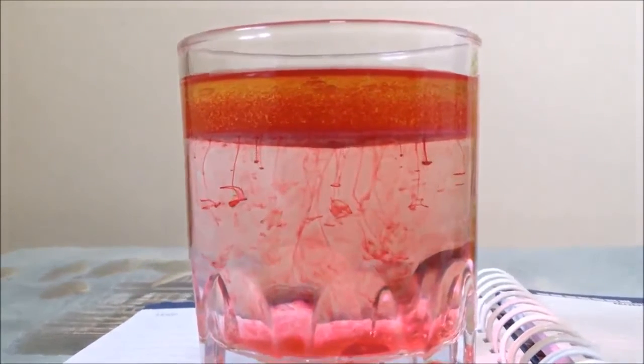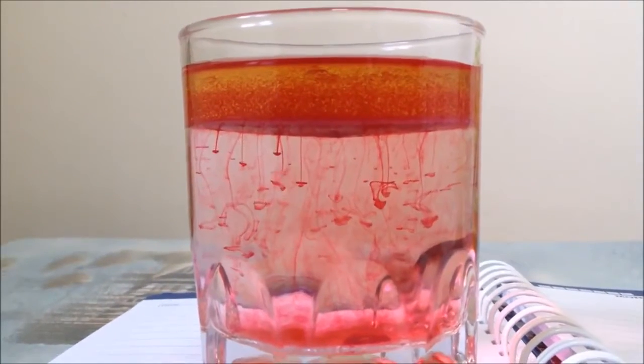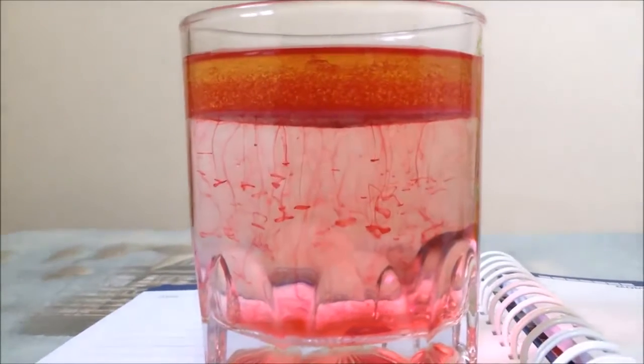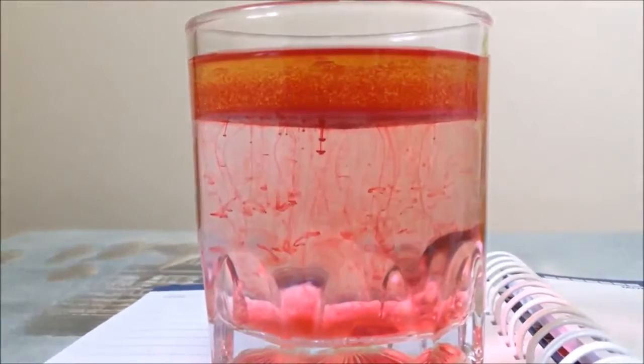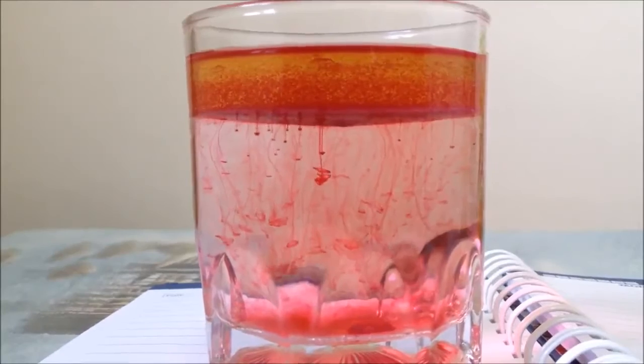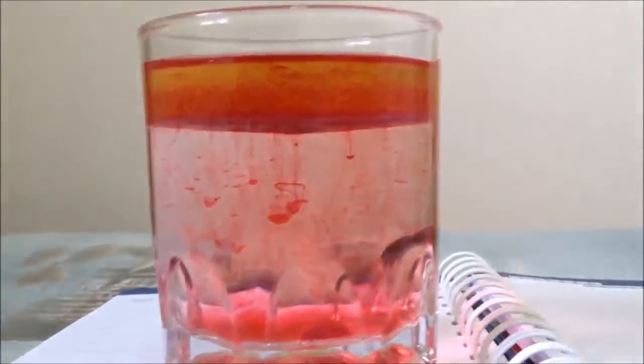When you wait for a while, food dye, which is heavier than cooking oil, starts separating and starts falling down to the bottom of the glass, just like water. It looks like raining blood.